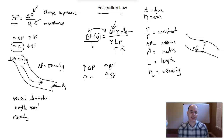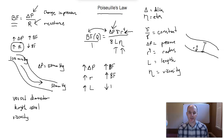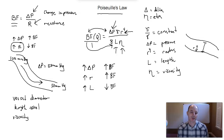As you vasodilate — as the vessel gets larger — there's going to be better blood flow through the vessel. Length, on the other hand: if there's an increase in length for the vessel, there will be a corresponding decrease in blood flow. Blood flow is on the top of the equation, whereas length is on the bottom of the equation. When two variables are on opposite sides, you have an inverse relationship. As your length goes up, there are more opportunities for blood to come in contact with the walls of the vessel — therefore more friction — so you're going to have a decrease in blood flow.